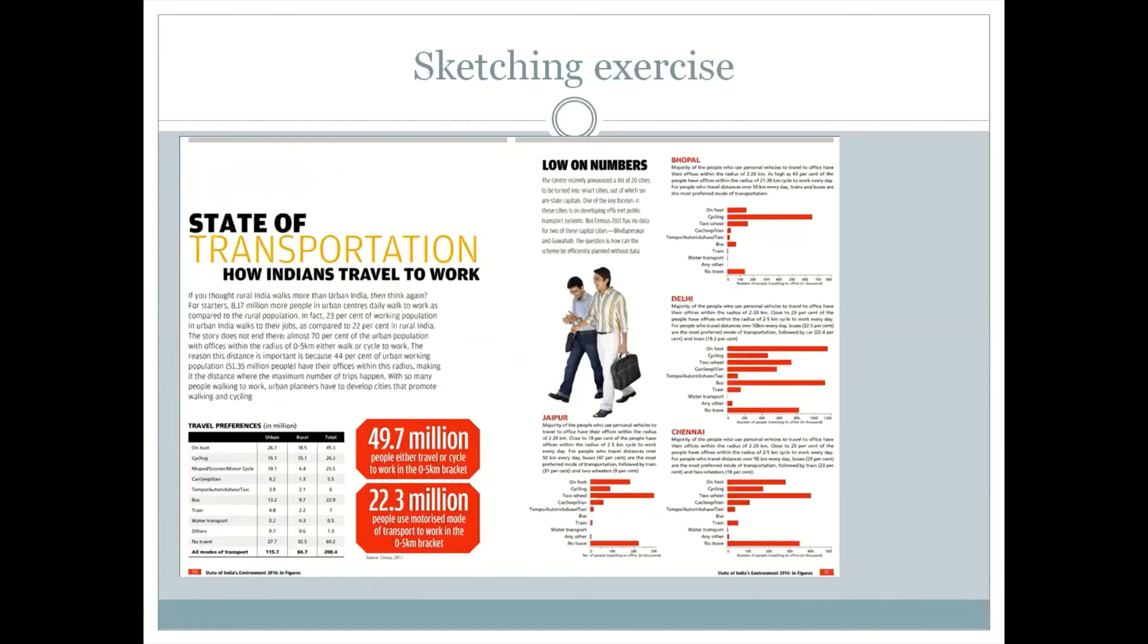There are a few things that I would want to point out before we conclude this video. These are things that are universal and should always reflect in any form of visualization that you do. First is that try to keep small units. If you look at any visualization that we do, all of these units are independently complete. If I were to just read this much, it'll tell you something. If I were to just read this much, it'll also give you some insight. Similarly, this number on its own is telling something: 49.7 million people either travel or cycle to work in the zero to five kilometer bracket. Similarly, all of these things are doing that. The reason why we do this is primarily